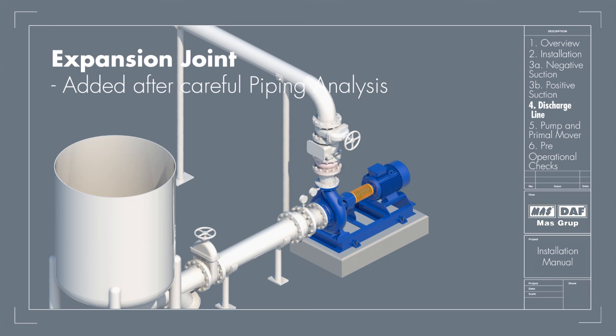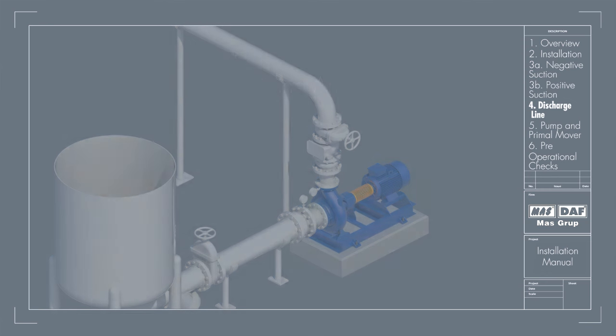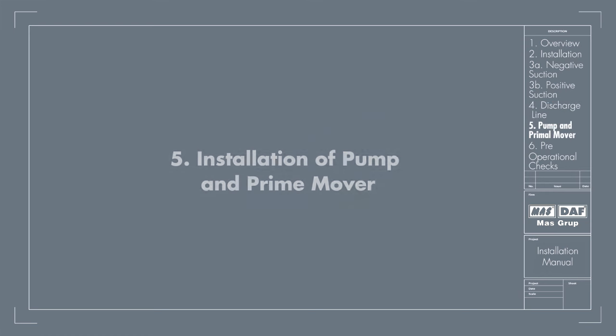Expansion joint may be used only after a careful piping analysis, especially when the discharge pressures are on the higher side. Installation of pump and prime mover.